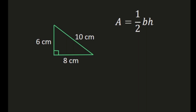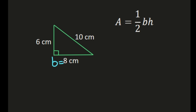In this example, we have a right triangle that's 6 centimeters by 8 centimeters by 10 centimeters. Our formula for the area of a triangle is area equals one-half times the base times the height. So we need to label our base of 8 centimeters. Our height is from the vertex opposite the base, perpendicular to the base — so in this triangle, the 6 centimeters is going to be our height.